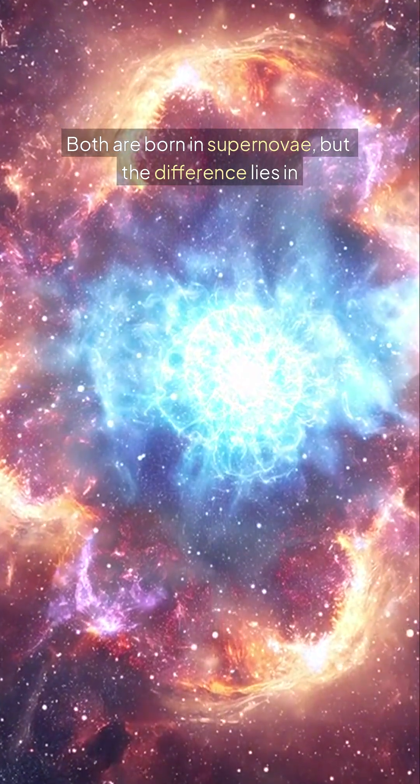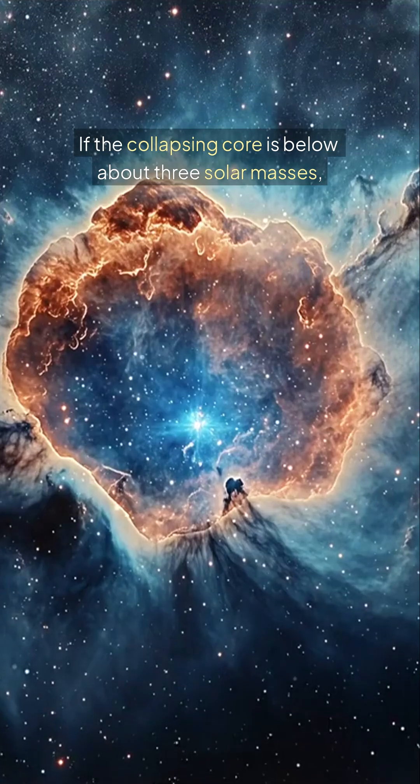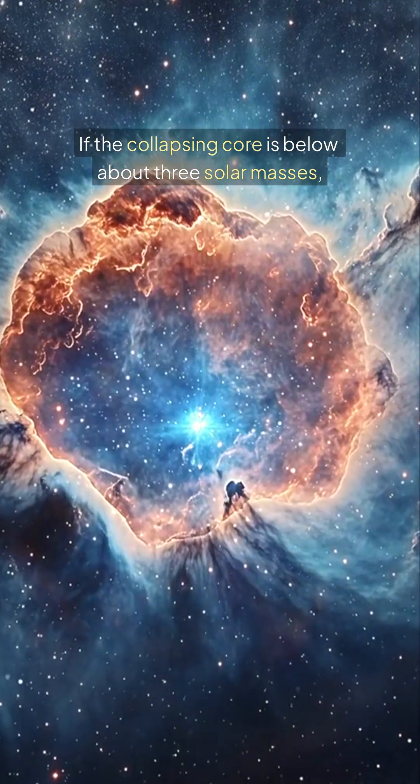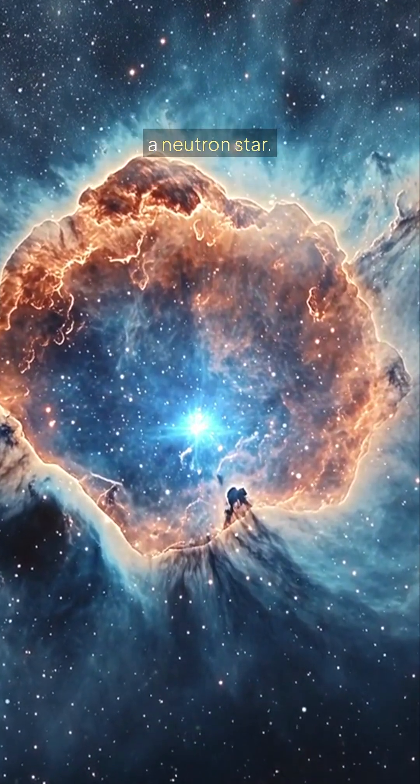Both are born in supernovae, but the difference lies in whether gravity can be resisted. If the collapsing core is below about three solar masses, neutrons themselves can withstand the pressure, creating a neutron star.